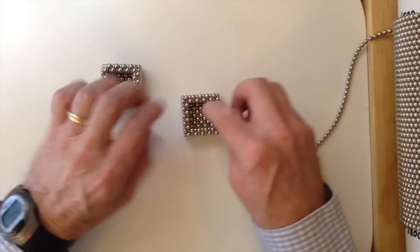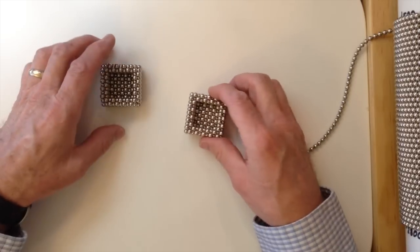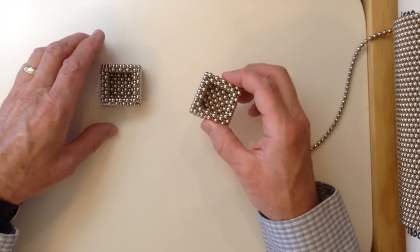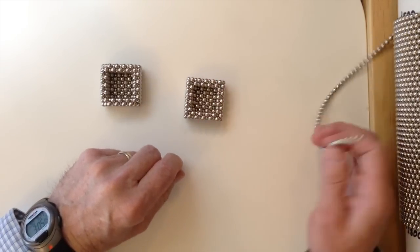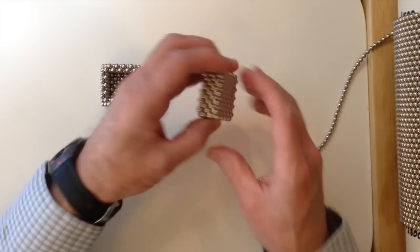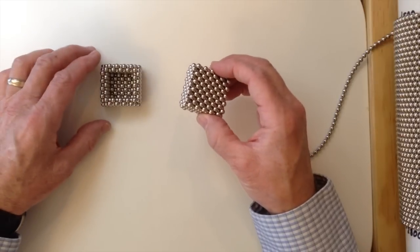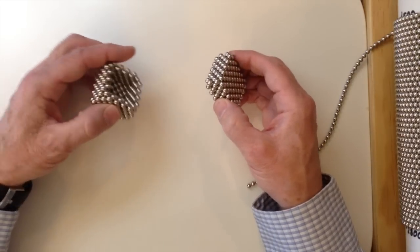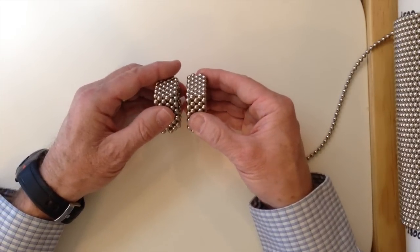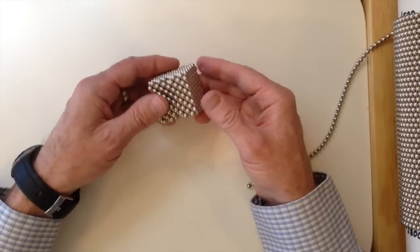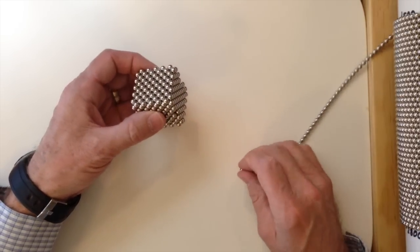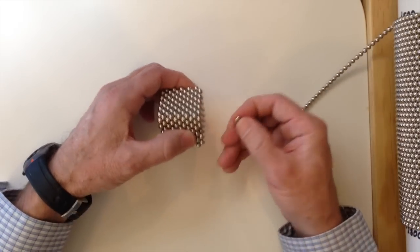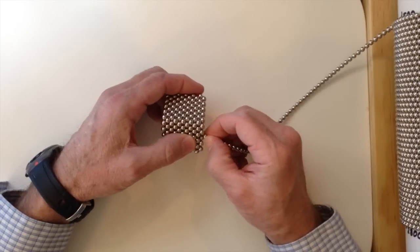Now remembering that we've built this top part upside down, but with the opposite end of the chain, when we turn this over, its polarity should match the original. And with a little luck, it does. And then all that is missing now is to pop a magnet in each one of these corners.